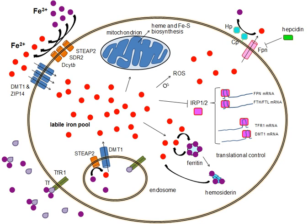Proteins can contain iron as part of different cofactors, such as iron-sulfur clusters and heme groups, both of which are assembled in mitochondria.